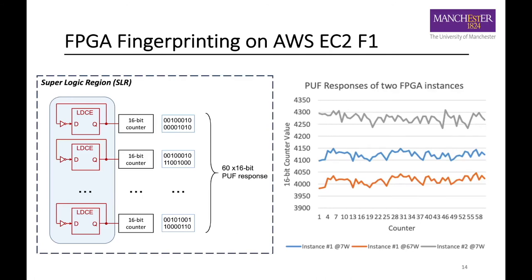In order to identify the instance that we are attacking, we use a simple PUF just for the purpose of fingerprinting the FPGA fabric. The right figure shows an example of PUF responses. From this, we can clearly see the effect of power or temperature on the speed of the PUF. Therefore, we could know if the fabric has been used recently, or, put another way, we could also have some idea about the scheduling policy of FPGAs in the data center.